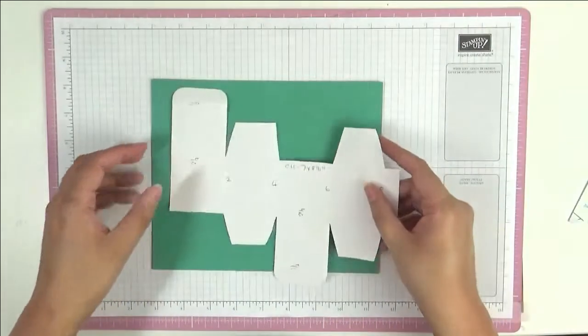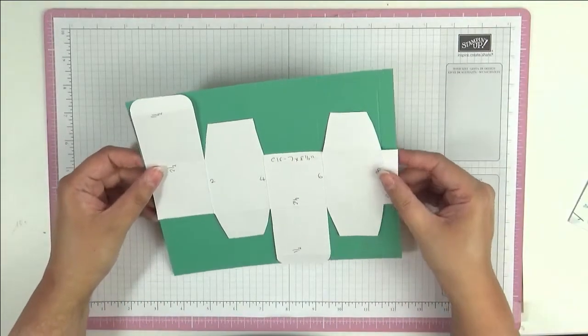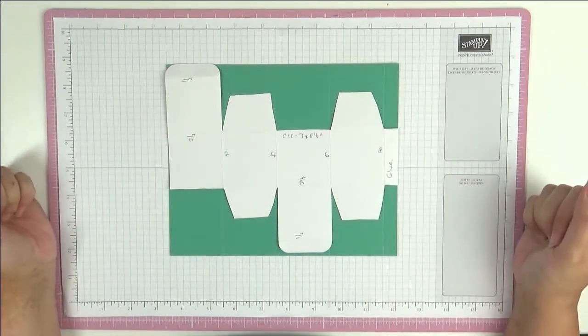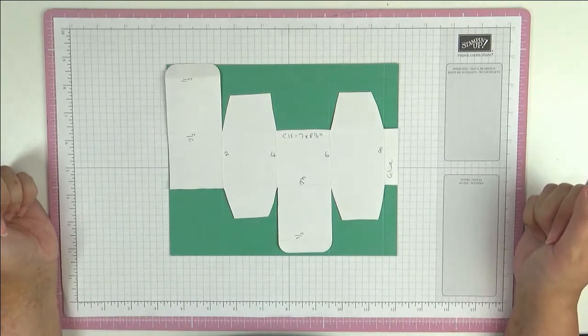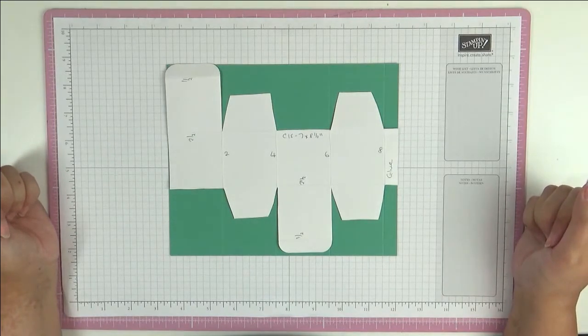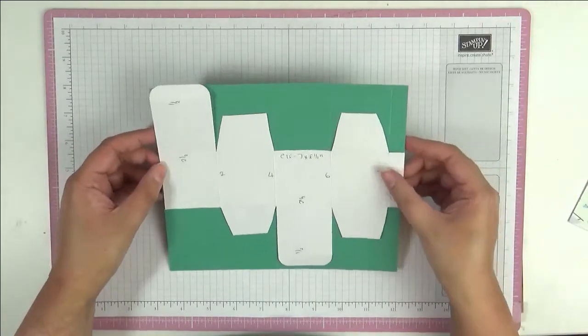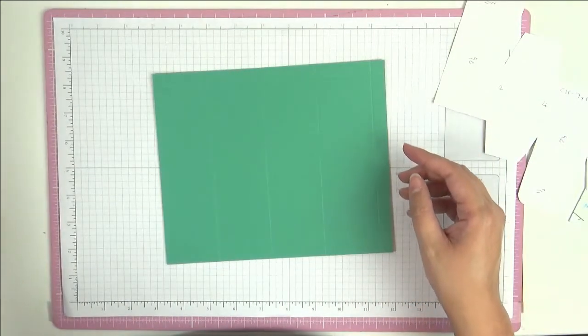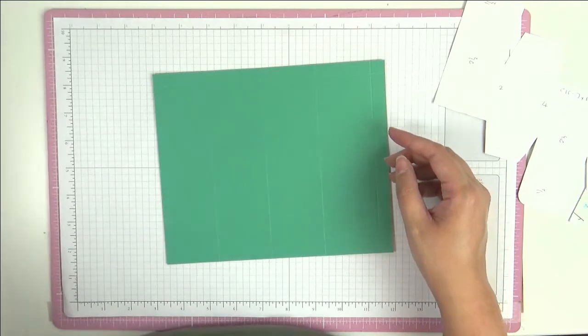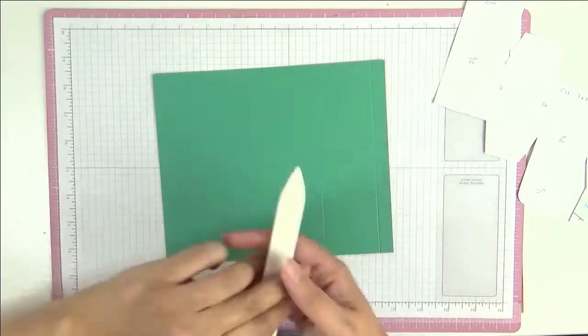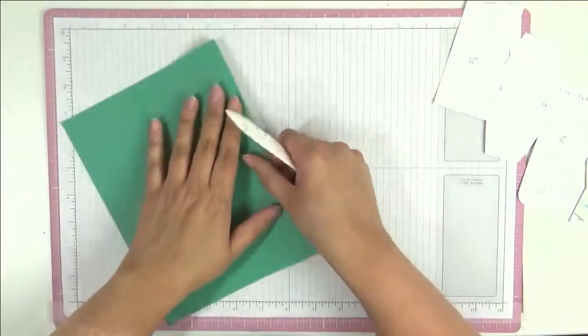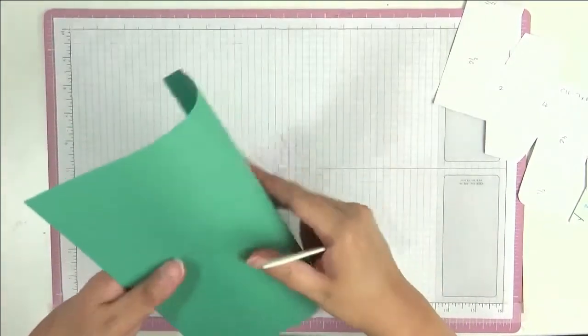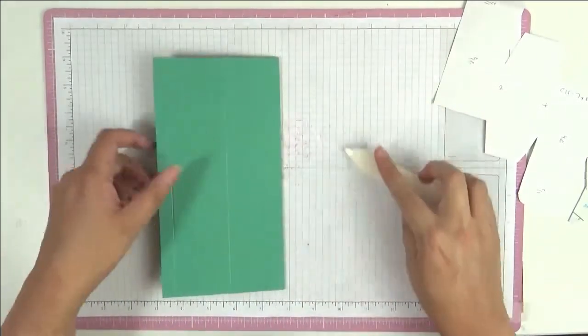Let's get our scoreboard out of the way and bring back our template. You can see here how it fits on the top. I will take a picture of this template right now. Pause the screen and take a screenshot of it. First things first, we are going to fold on all of these score lines.